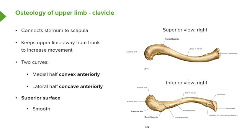Along the anterior surface, the medial half has a convex curve, so anteriorly this curve is convex. Whereas more laterally, the curve is concave anteriorly. This is how we orientate our clavicles — we find the smooth superior surface, and then anteriorly we have a convex curve medially and a concave curve laterally. Along the posterior surface, this will obviously be the opposite.